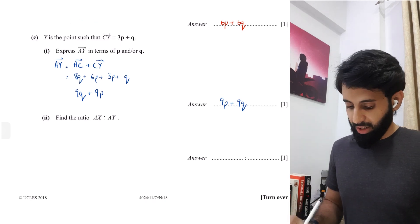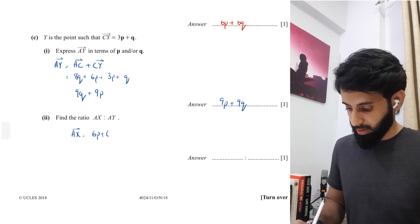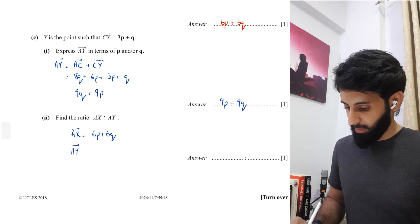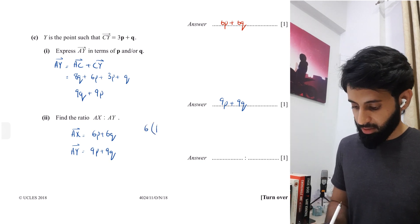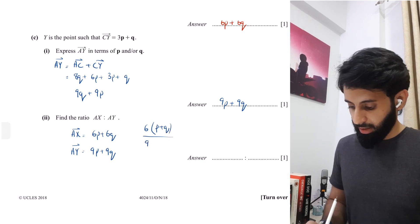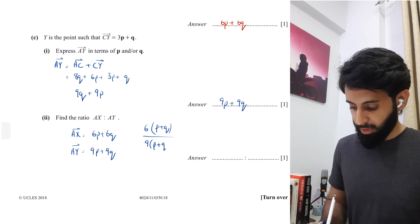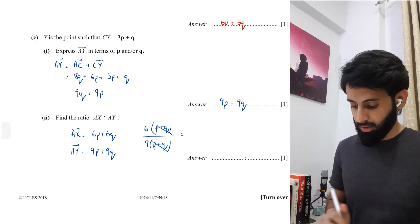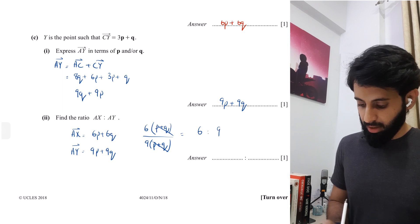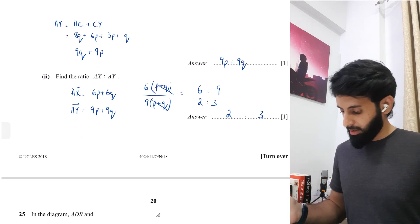Find the ratio AX is to XY. We have AX equals 6P plus 6Q, and AY is 9P plus 9Q. Finding the ratio basically means I'm going to divide the two. I'd like to take 6 common from AX so I get P plus Q inside the bracket, and take 9 common from AY so again I'm left with P plus Q. P plus Q and P plus Q get cancelled out. 6 upon 9 when simplified is 2 upon 3. So the answer is 2 ratio 3.